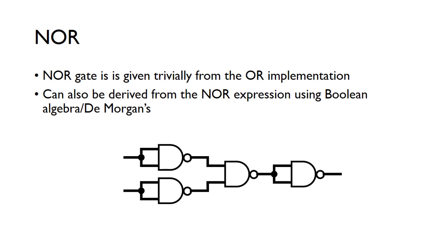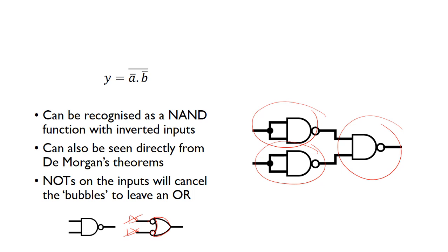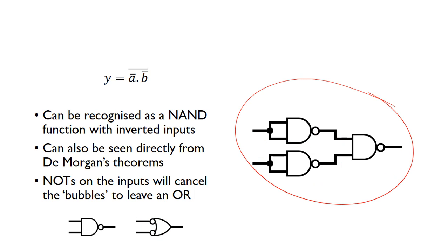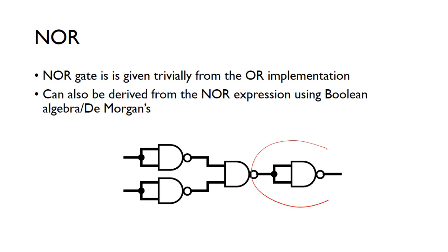So to get a NOR is very easy. We've just got the OR equivalent using NANDs. We can just put an inverter after that, and that will give us a NOR gate. You can also derive it in a very similar way - get the expression for a NOR gate, use Boolean algebra and De Morgan's theorems, and you can derive this circuit.